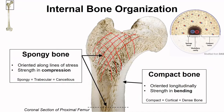In contrast, the compact bone, which is found on the outside of bones, is very regularly organized longitudinally. We can imagine a very large osteon in the shaft of the bone, in that compact bone. If we take a cross section of it, like we've done here, we would look at an osteon like this in the upper right.